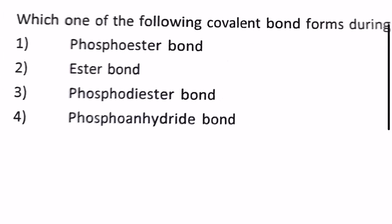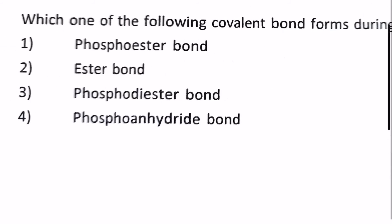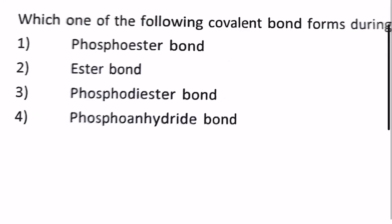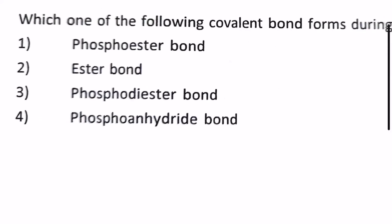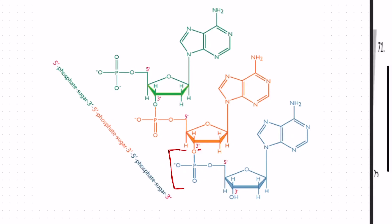Next question: which one of the following bonds form during DNA replication? 1) phospho ester bond, 2) ester bond, 3) phosphodiester bond, 4) phospho anhydride bond. Our answer is phosphodiester bond. To give you our reference here, in this we see the phosphodiester linkage is being formed between the two sugars of the two bases attached. So in the 3' and here in the other one the 5' are linked with the phosphate bond which is forming a covalent phosphodiester linkage.